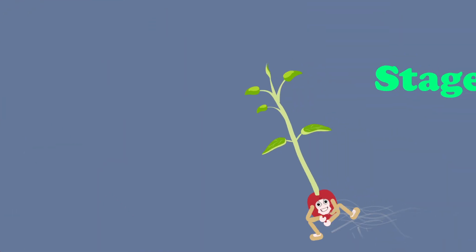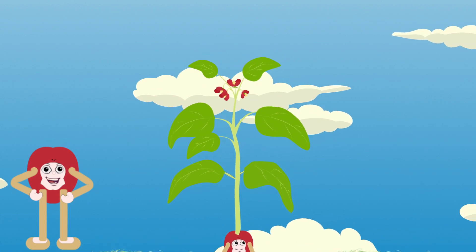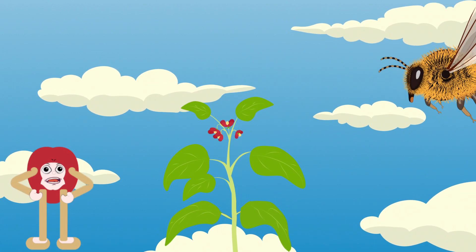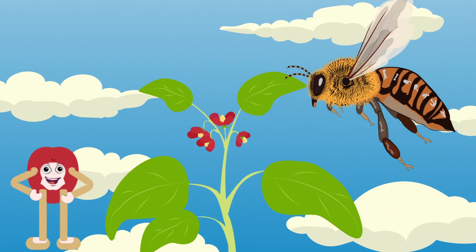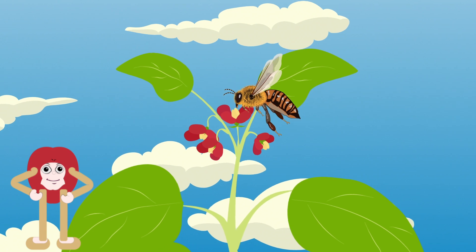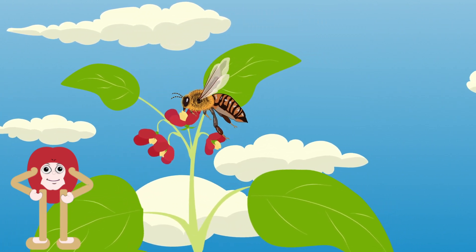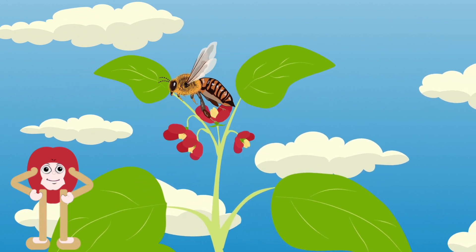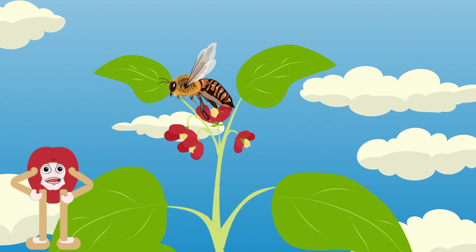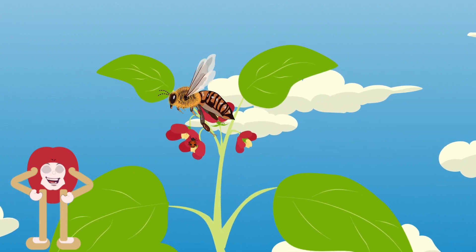Stage 5: The Flowering Stage. This is when things start to get even more exciting. The bean plant grows flowers. These flowers are where the magic of making beans happens. Inside the flowers, there are tiny parts called pollen and ovaries. Pollen from one flower needs to reach the ovary of another flower for beans to form.